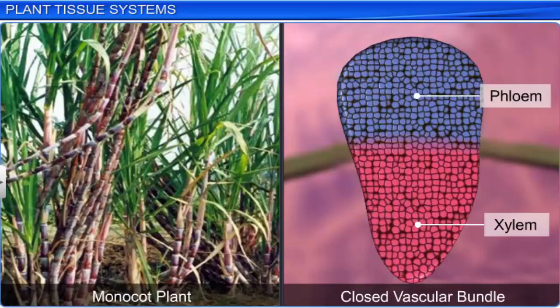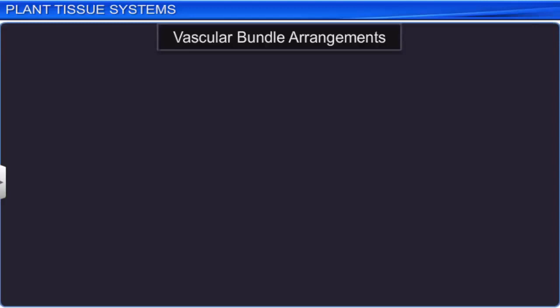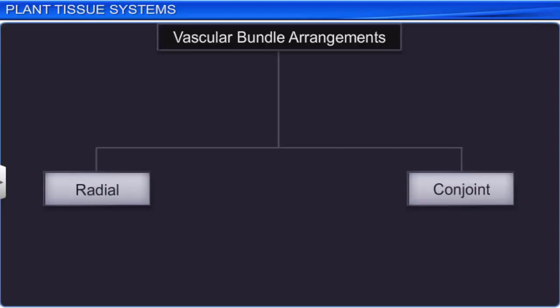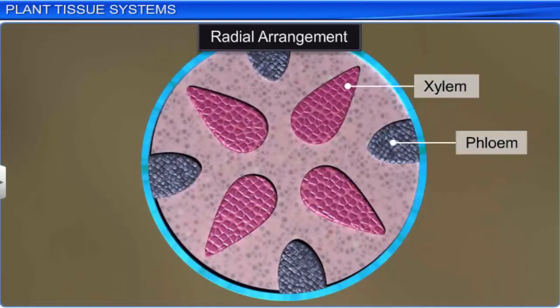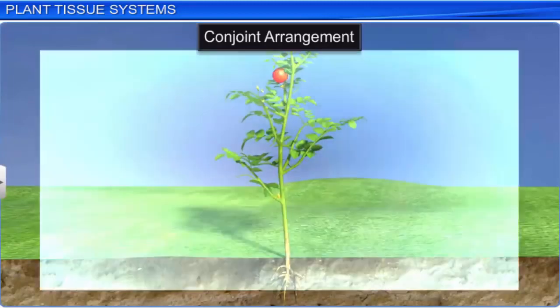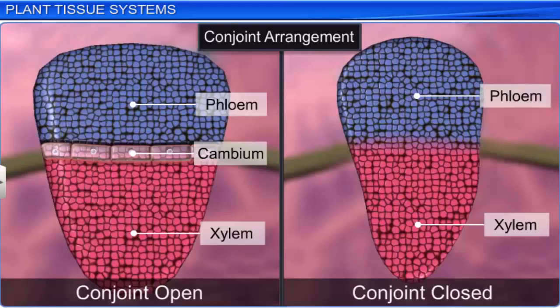There are two types of vascular bundle arrangements: radial and conjoint. The radial arrangement is generally found in roots, where the xylem and phloem in a vascular bundle are arranged in an alternate manner at different radii. In the conjoint arrangement, found in stem and leaves, the xylem and phloem are situated at the same radius of the vascular bundles. The conjoint vascular bundles usually have the phloem located only on the outer side of the xylem. In the conjoint open arrangement, cambium is present between the xylem and phloem, while in the conjoint closed arrangement, the cambium is absent.